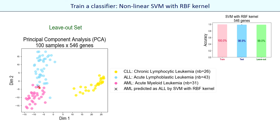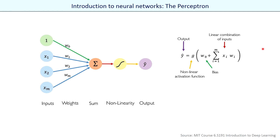Nowadays neural networks and deep learning are very popular in data analysis and precision oncology in particular. It could be interesting to train a neural network for our leukemia classification use case and compare with other methods. I will introduce here the main idea of a basic neural network. If you need more details, please check the excellent MIT course Introduction to Deep Learning publicly available on YouTube. I will use some slides of this course to briefly explain what a neural network is.